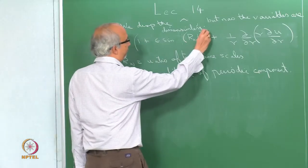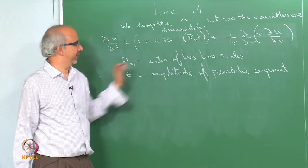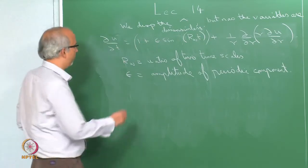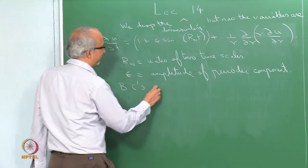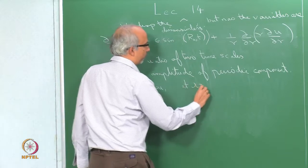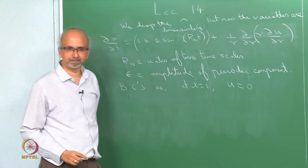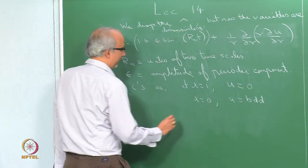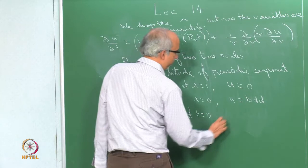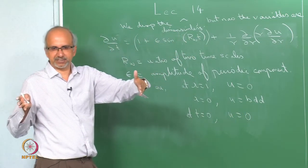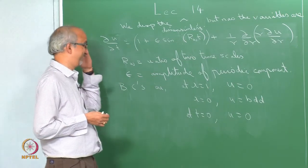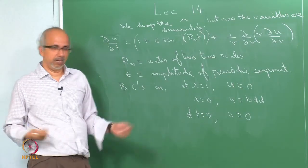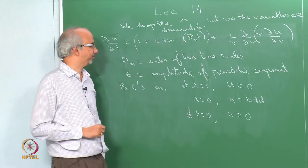To solve this equation I need boundary conditions and initial conditions. The boundary conditions are: u = 0 at r = 1 (no-slip), u is bounded at r = 0, and at t = 0, u = 0 — meaning the fluid was initially at rest. Now I am suddenly imposing this periodic pressure drop and trying to understand what happens.